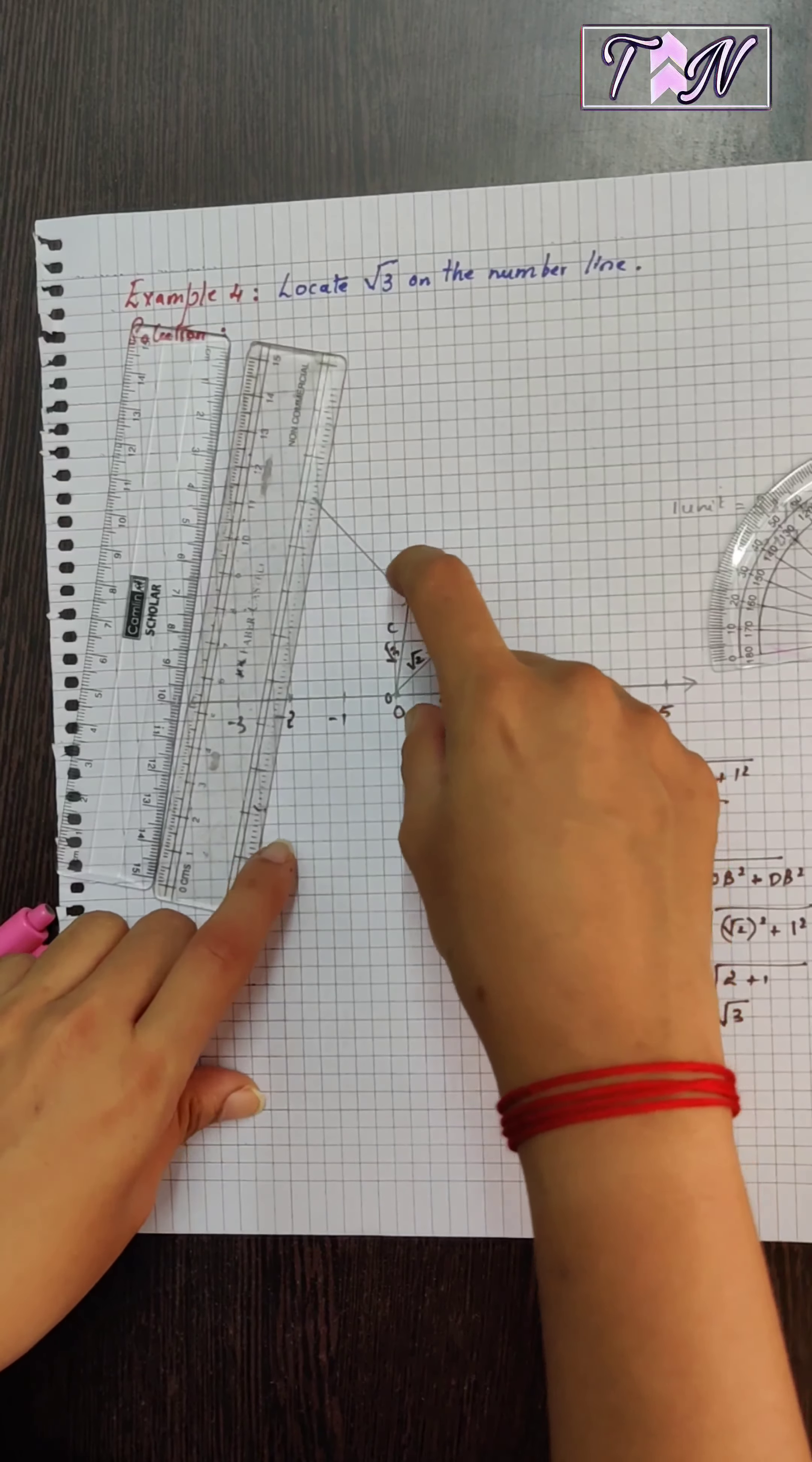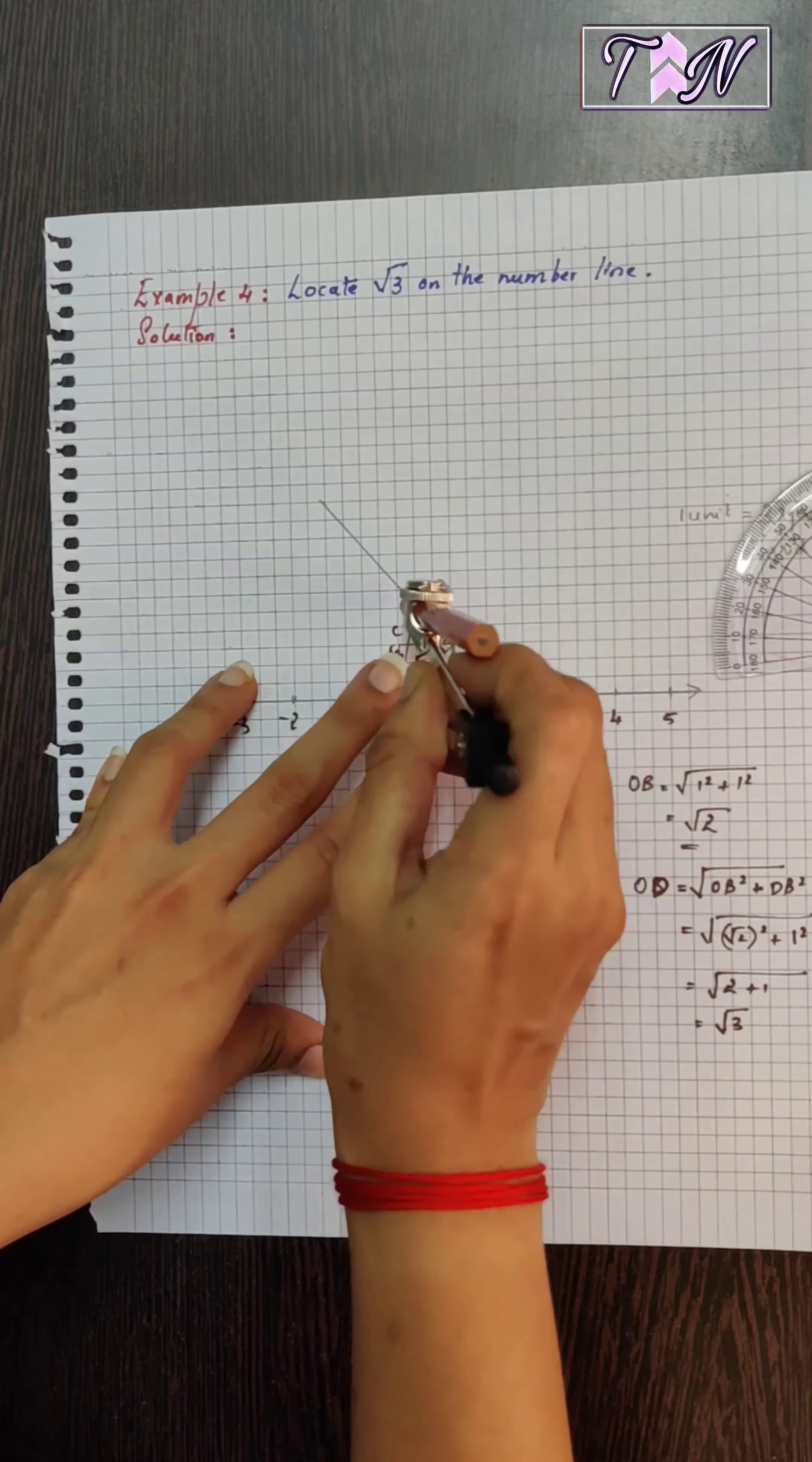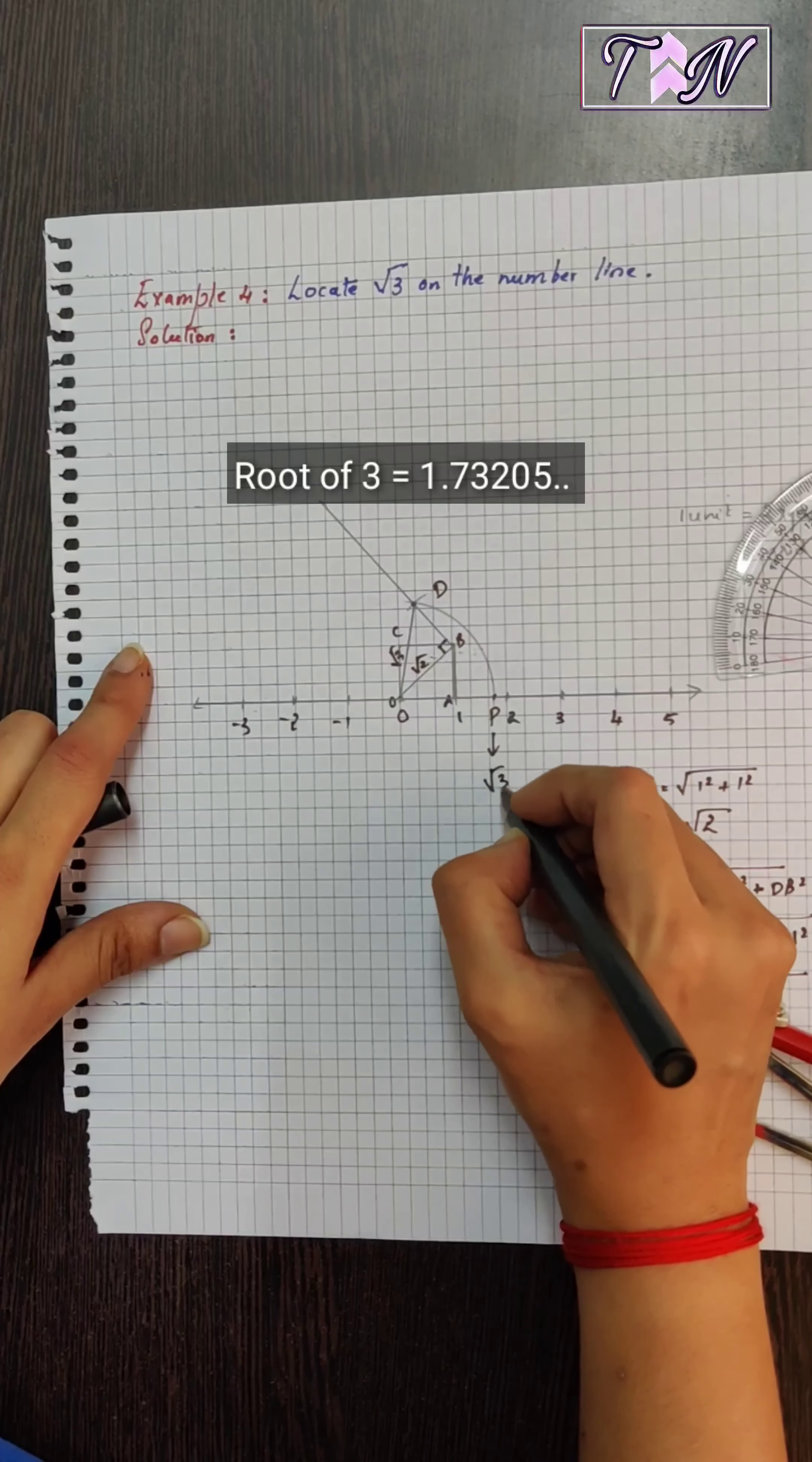How to plot root 3 on the number line? Take the compass, place it on O and with OD as the radius, mark an arc such that it intersects the number line at point P. So, this would be the point P and that is nothing but root 3.